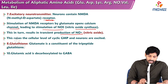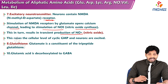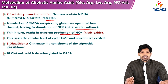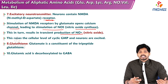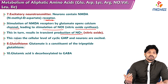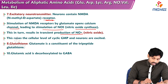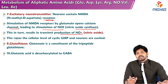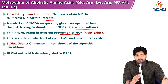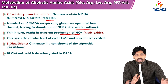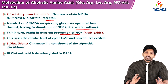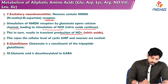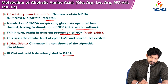Stimulation of NMDA receptors by glutamate opens calcium channels, leading to stimulation of nitric oxide synthase. This results in transient production of nitric oxide, raising cellular levels of cyclic GMP, and neurons are excited — confirming glutamate as an excitatory neurotransmitter. Glutamate is also a constituent of the tripeptide glutathione.